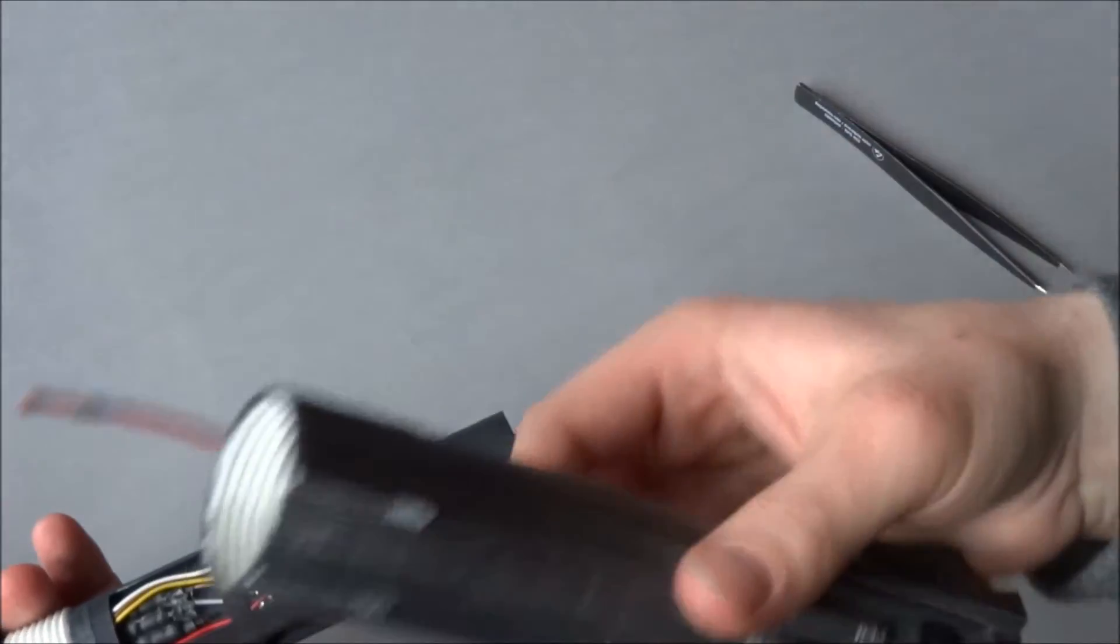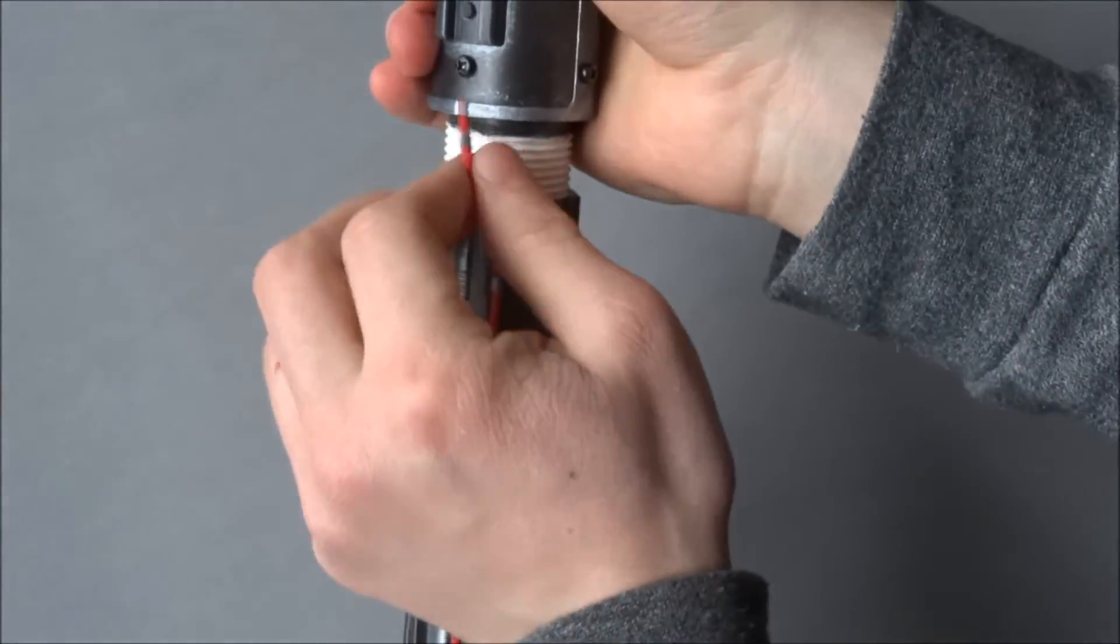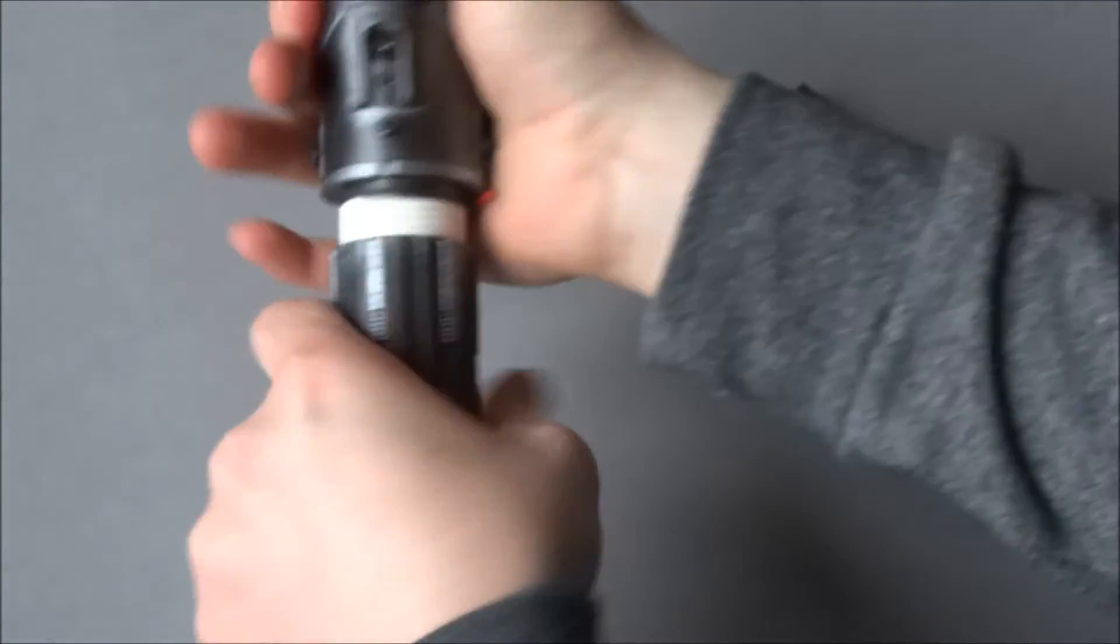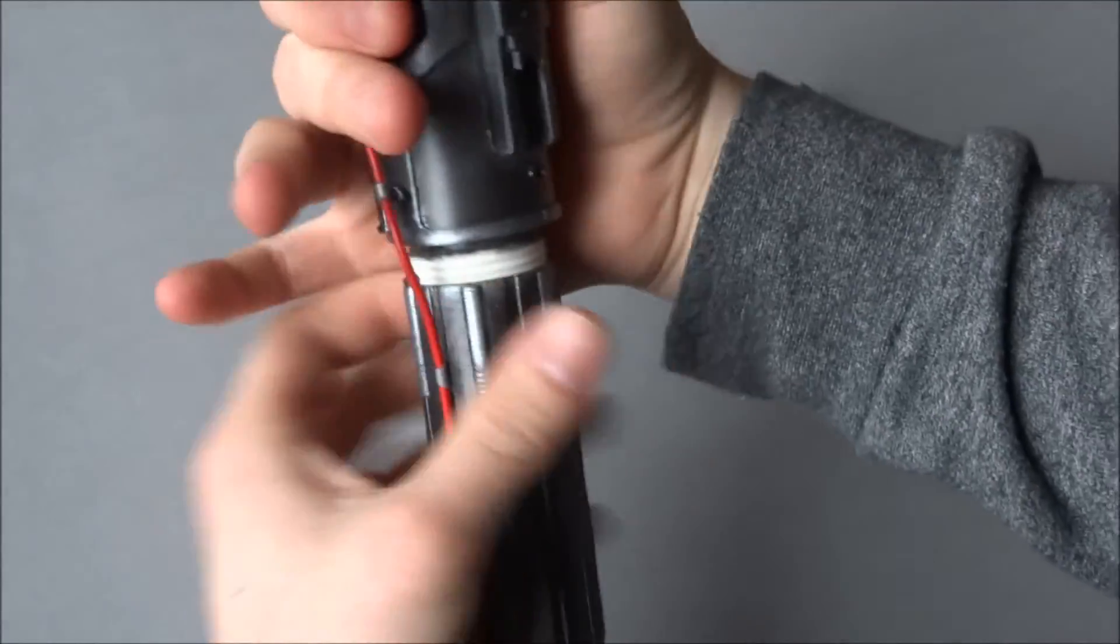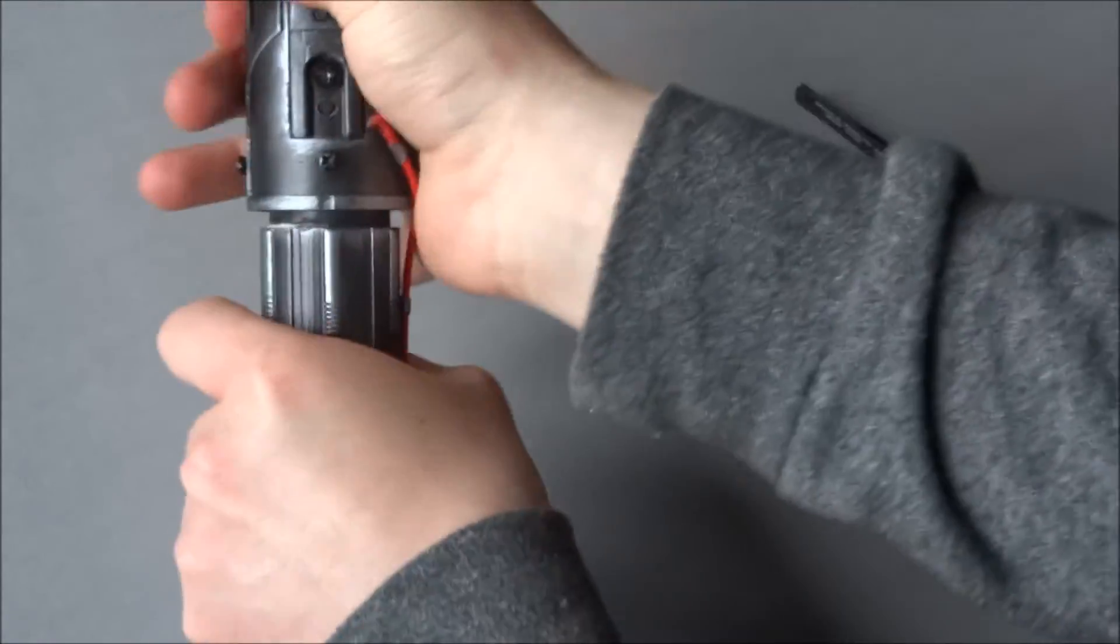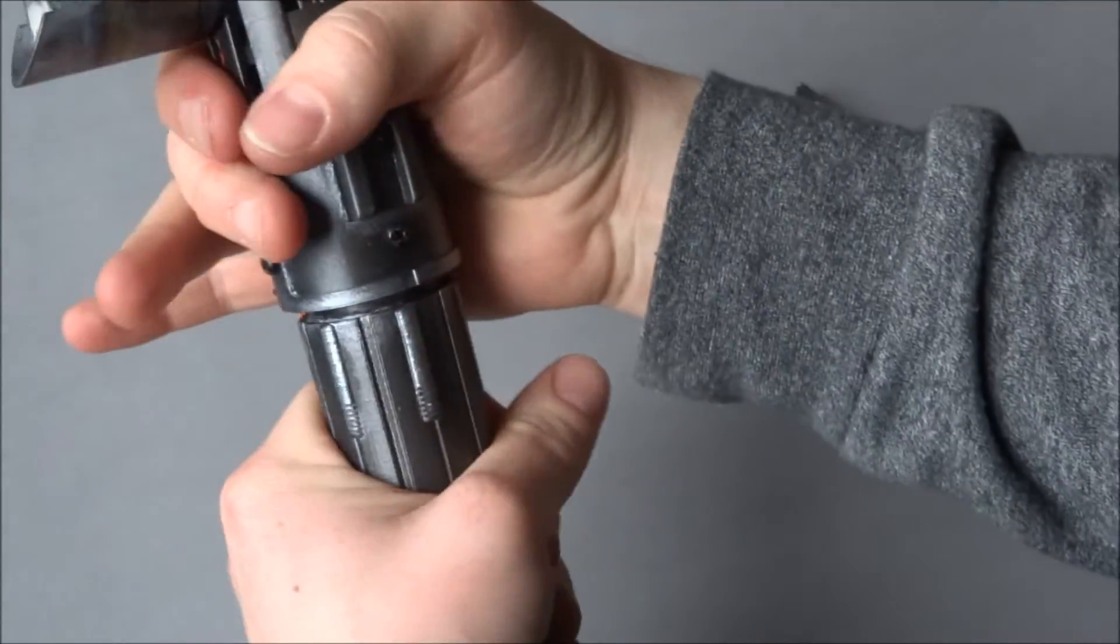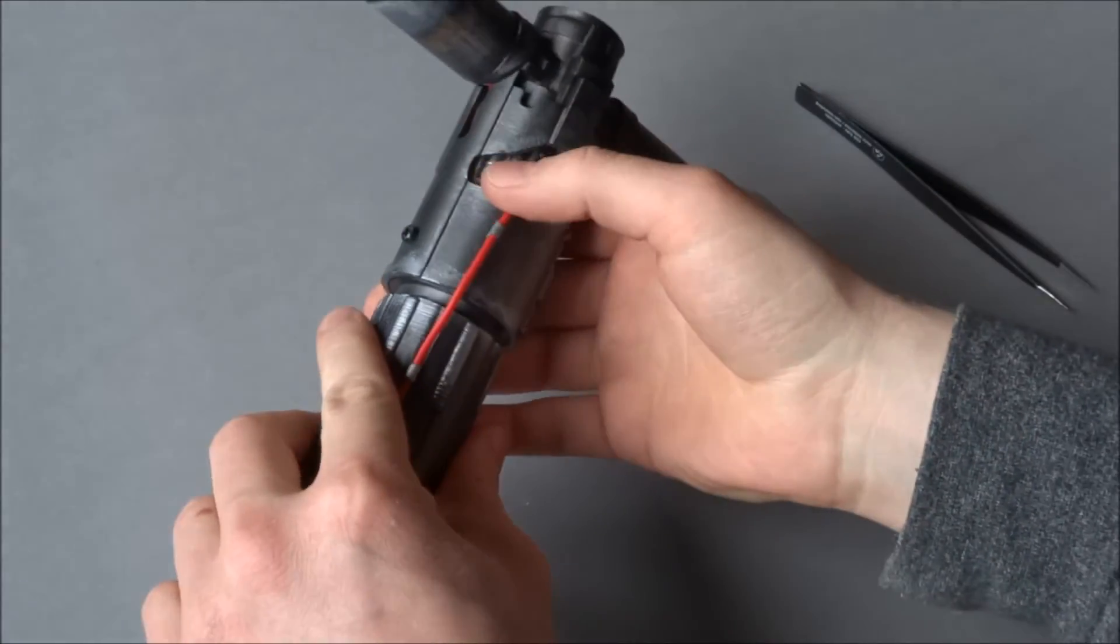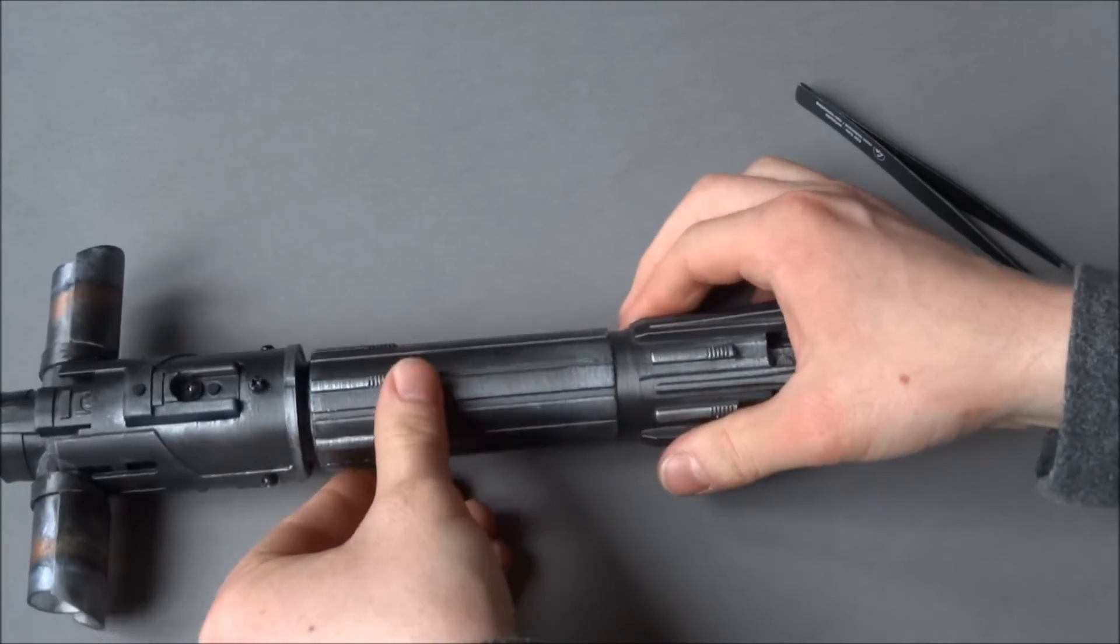When you are done you just take the bottom of the saber and place it back on and screw it back to your saber. When you are done then you can glue the cable into the right place and that's it.